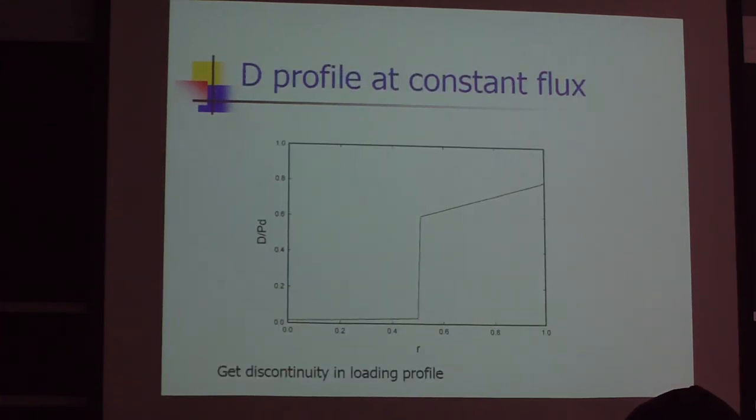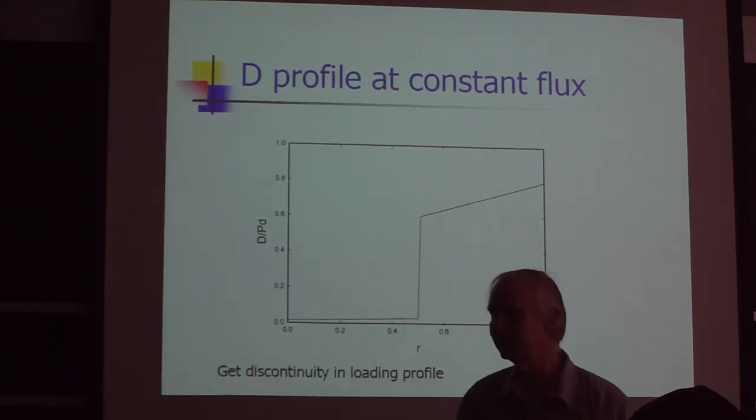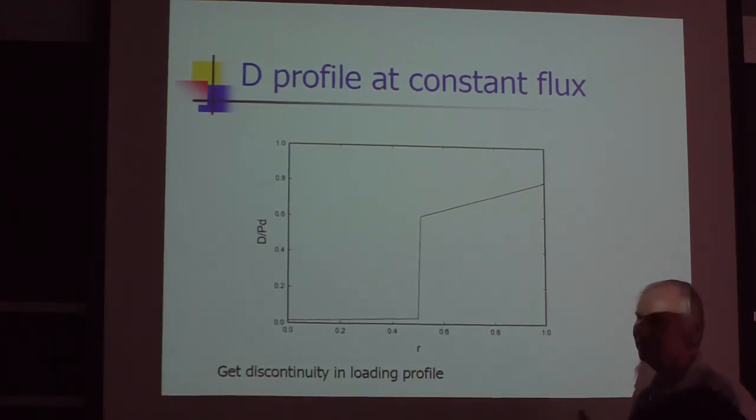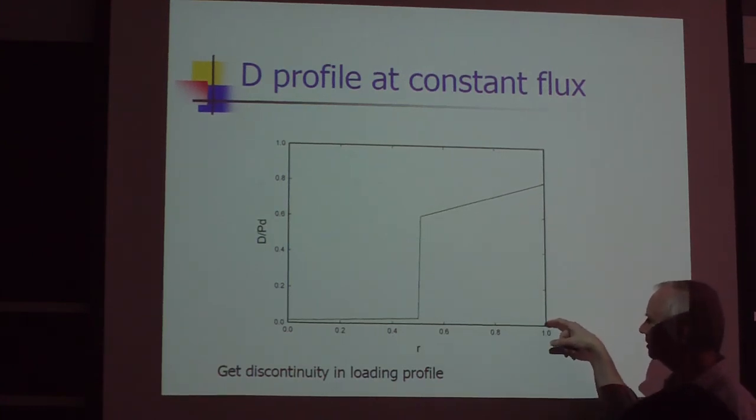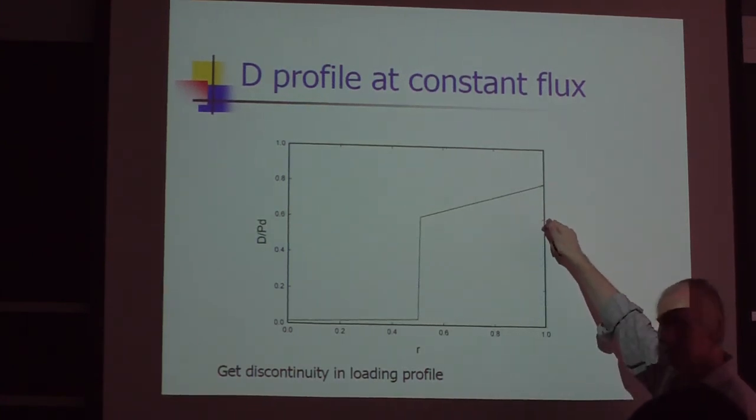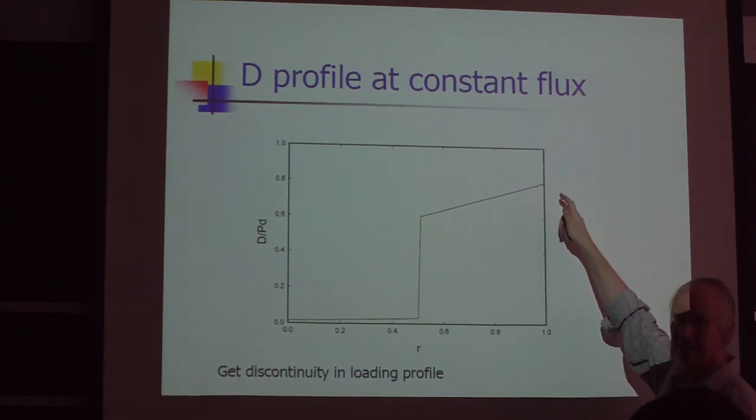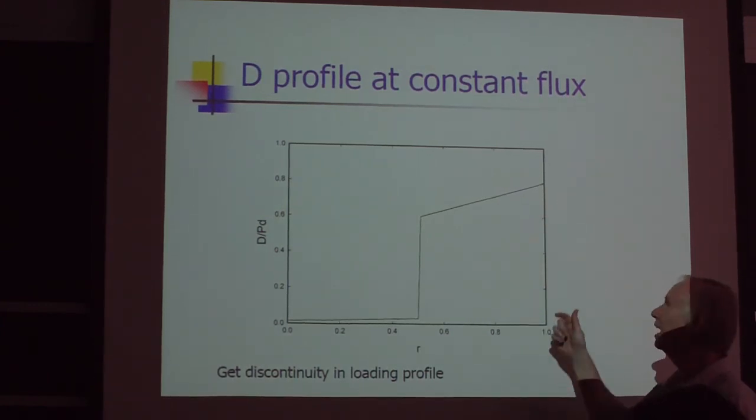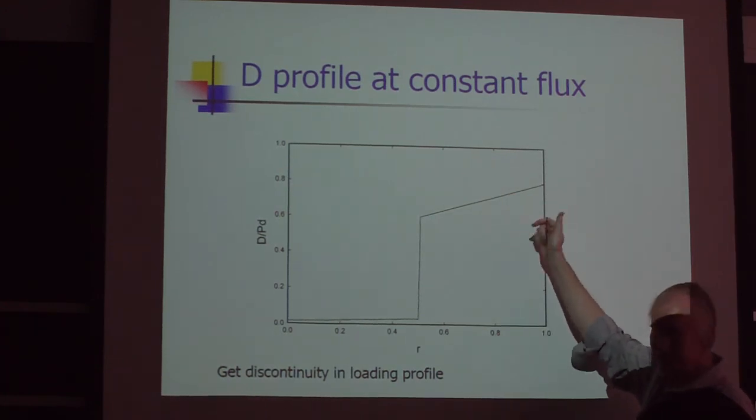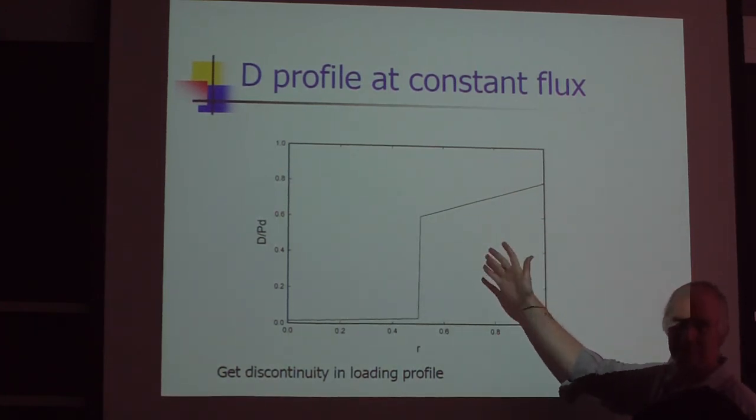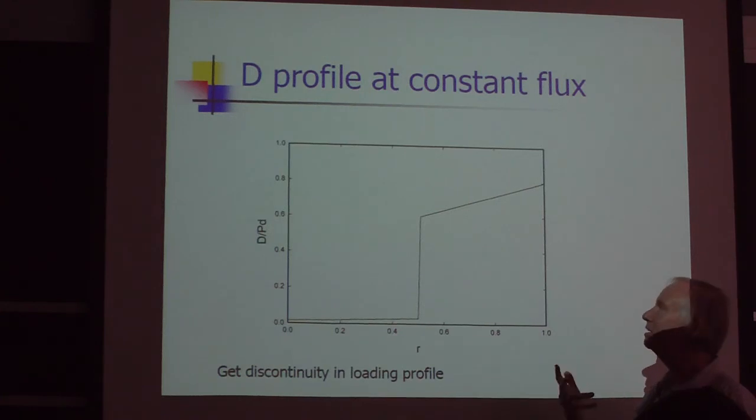Okay, so a consequence of having a low diffusivity is that if you start to load, you're going to generate a profile like this. Imagine this is the outside of the cylindrical cathode, the loading starts here. When you load electrochemically, you can get the surface loading to be relatively high pretty easily. And then once the hydrogen deuterium is here, it's trying to go inward. So it has to propagate by diffusion.